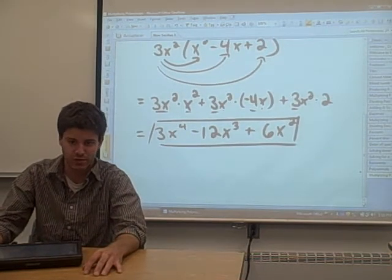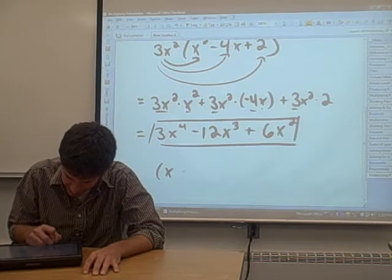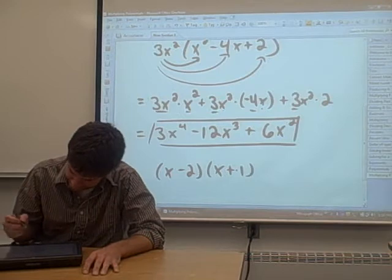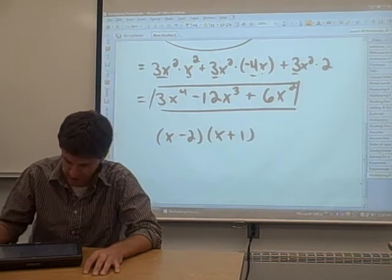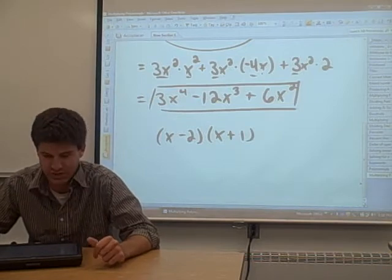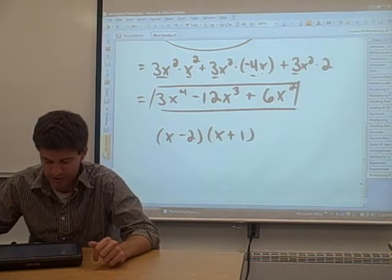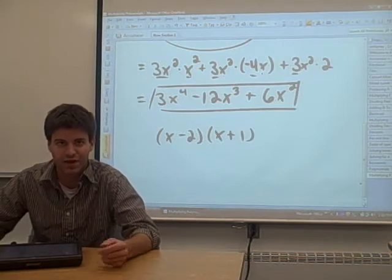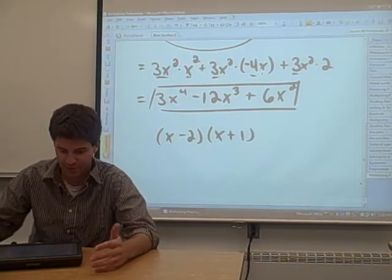Say you have two binomials that you'd like to multiply. Say x minus 2 and x plus 1. Say you want to multiply those two binomials. How do you do this? Well, in the specific case where you're talking about two binomials, there's this term called FOIL that I think is pretty universal and everybody remembers.